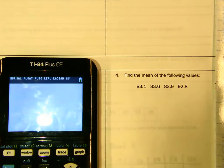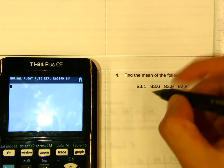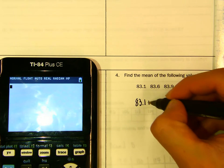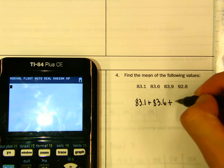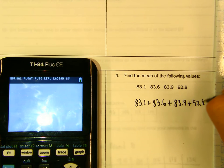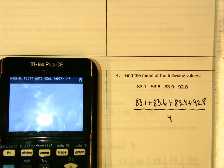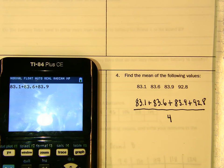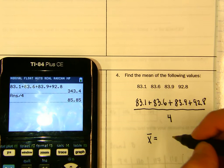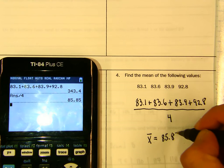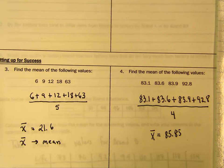Try it for this one — pause the video and try it yourself. Let's see: 83.1 + 83.6 + 83.9 + 92.8, then divide by how many values — that's four. So 83.1 + 83.6 + 83.9 + 92.8 divided by 4 gives x̄ = 85.85.